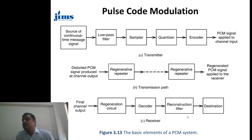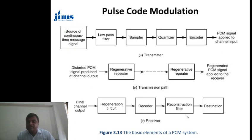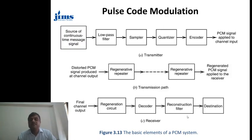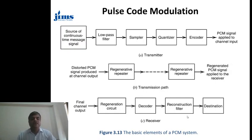Pulse code modulation is a process of converting an analog signal into a digital signal. In this conversion, the analog signal is first made band-limited, then passed through a sampler for sampling, then through a quantizer for quantization — the output is a discrete signal — then through an encoder for coding, producing the digital signal. At the receiver, we require a regeneration circuit, then a decoder, then a reconstruction filter, and then the destination. These are the building blocks of pulse code modulation and demodulation. That's all for today's lecture. Thank you for your attention.